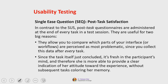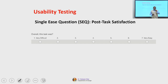The Single Ease Question is a post-task satisfaction scale. In contrast to the System Usability Scale, post-task questionnaires are administered at the end of every task in a test session. They are useful for two main reasons: they allow you to compare which parts of your interface are perceived as most problematic, and since the task just concluded, it is fresh in the participant's mind — she is more able to provide a clear indication of her attitude without subsequent tasks coloring her memory. The Single Ease Question is a single-item score that lets you understand the specific task that has been exposed to the user.